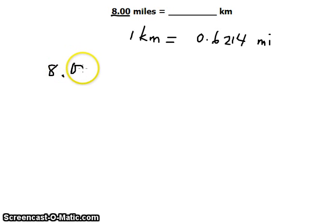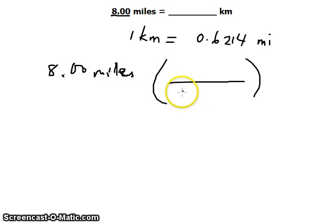Let's proceed with the solution: 8.00 miles. Now we can multiply this by the conversion factor. In the denominator we write the unit that we want to cancel out, so that would be miles, that's 0.6214 miles.